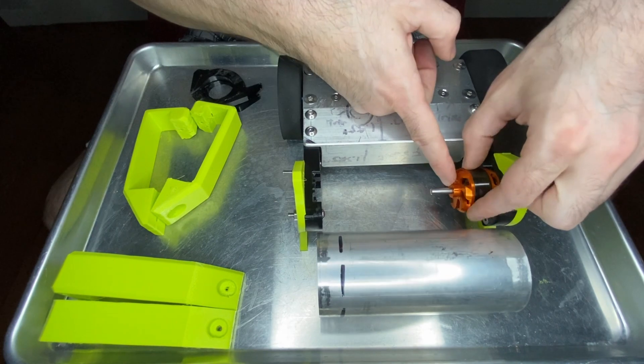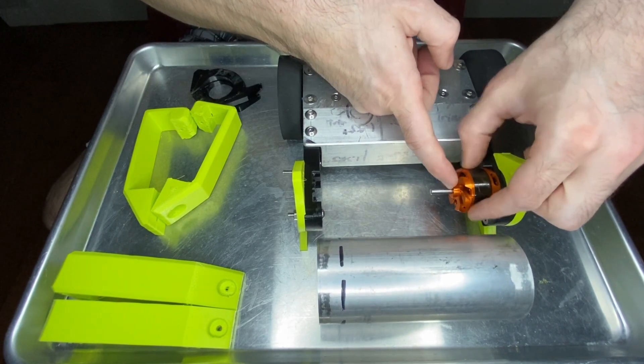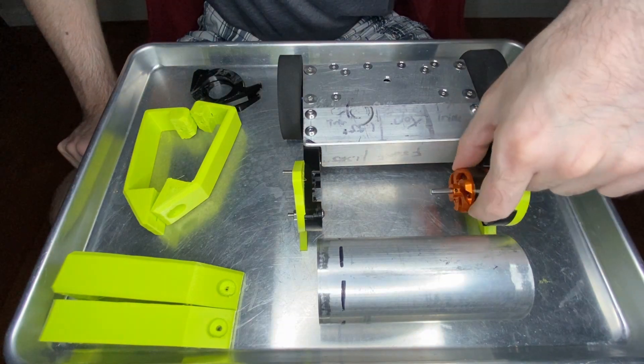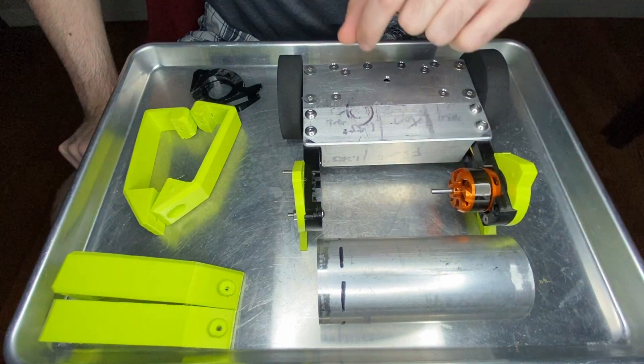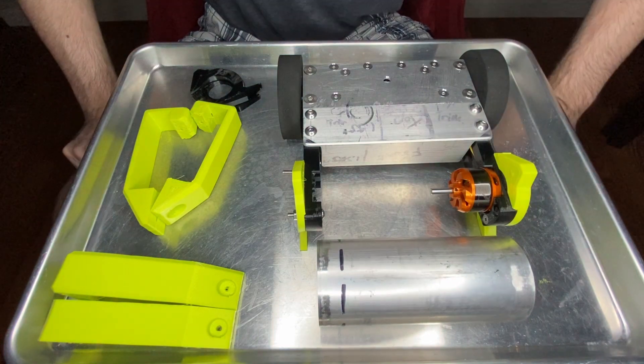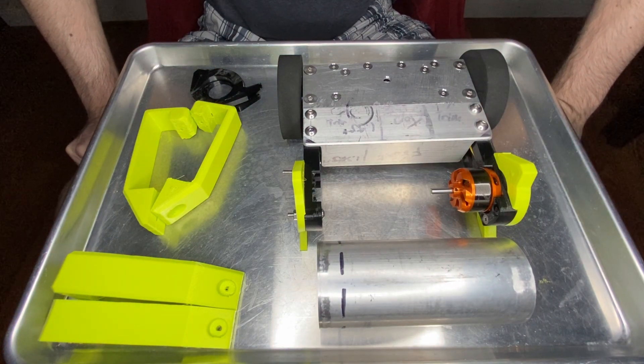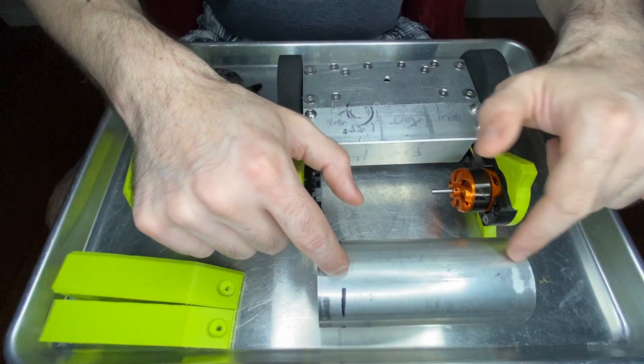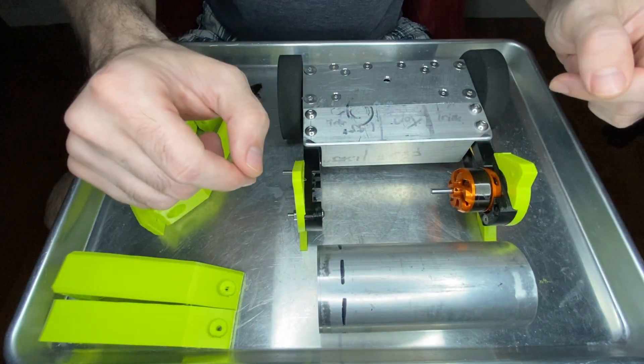And probably drill out the motor so that I can have the shaft go all the way through and have this spin not on the shaft, but on the weapon and the weapon will spin on the shaft. That's probably my best bet for making this setup as strong as I can.